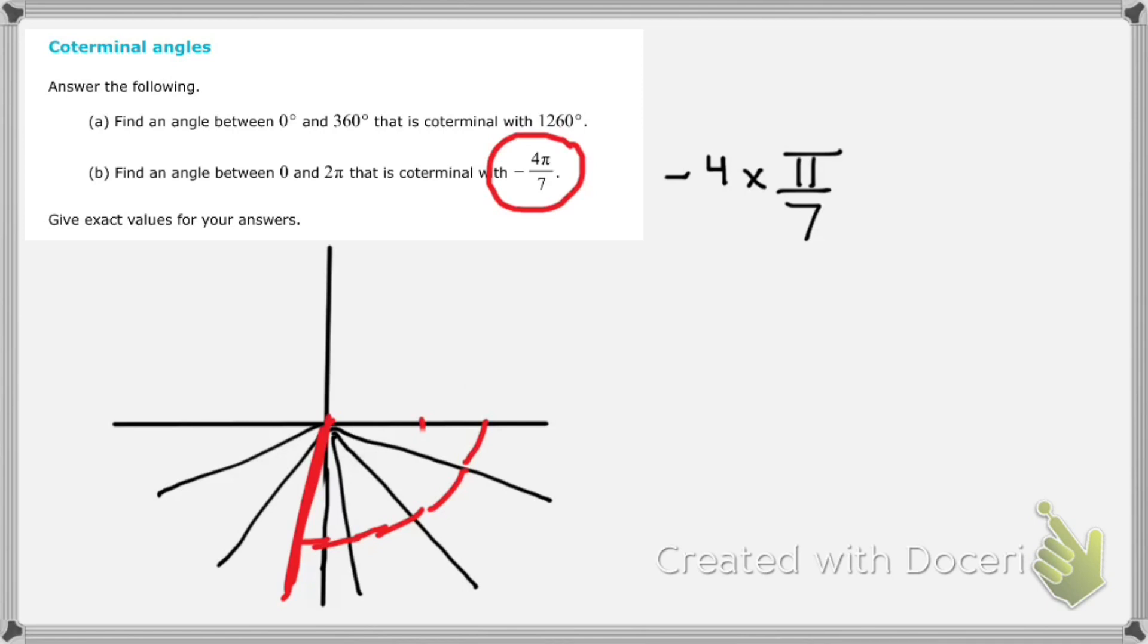You don't need to do this in order to understand this problem, but I think it's helpful to visualize what's going on. So we know where the terminal side of the angle is. This is the terminal side. And we want a coterminal angle that ends up at the same place, but it's got to be between 0 and 2π. So that means I have to rotate in a positive direction and end up at the same place.